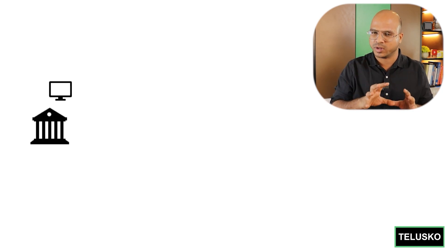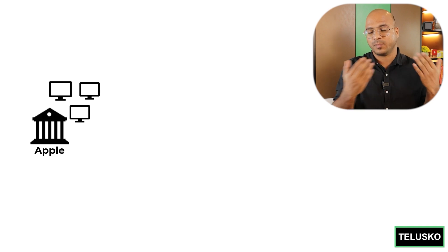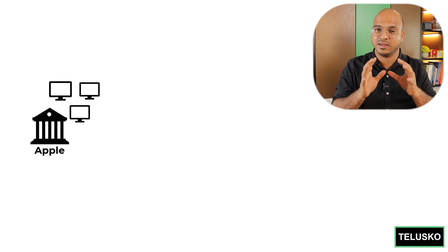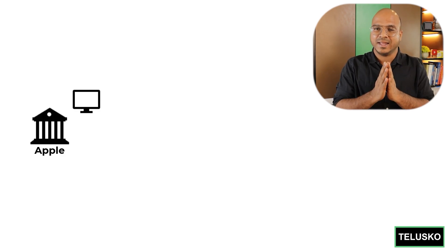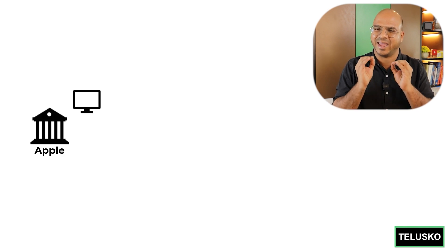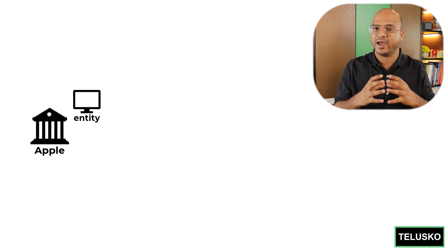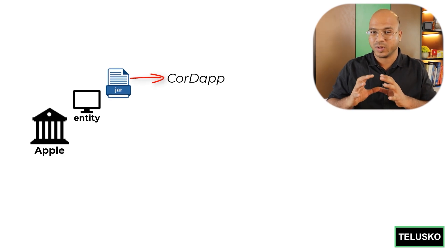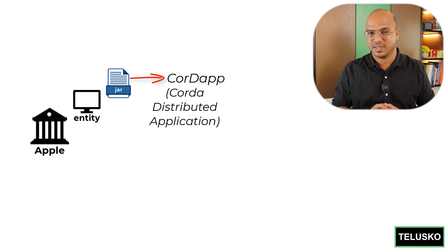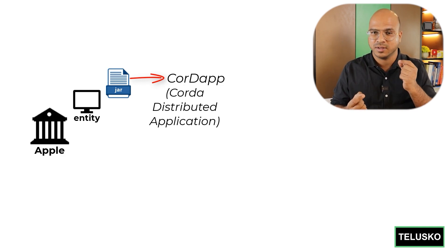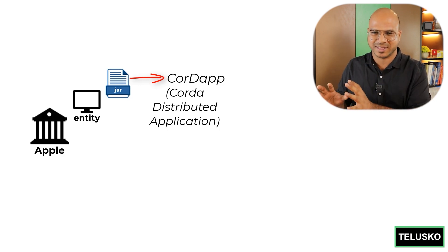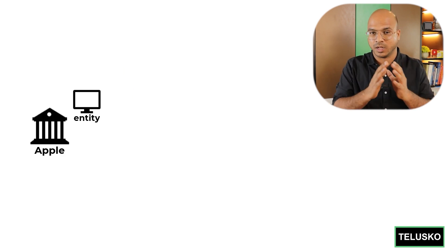When we talk about Corda, we have a lot of enterprises that want to communicate. How do you represent those enterprises on the network? One enterprise can have one node, or of course, one enterprise can have multiple nodes. Let's say Apple wants to be on the network — Apple can have one node. This node represents the actual entity. A node will have a Corda application, which is called a Corda app — a Corda distributed application. In this application, you can write your logic, your transactions, and maintain states.